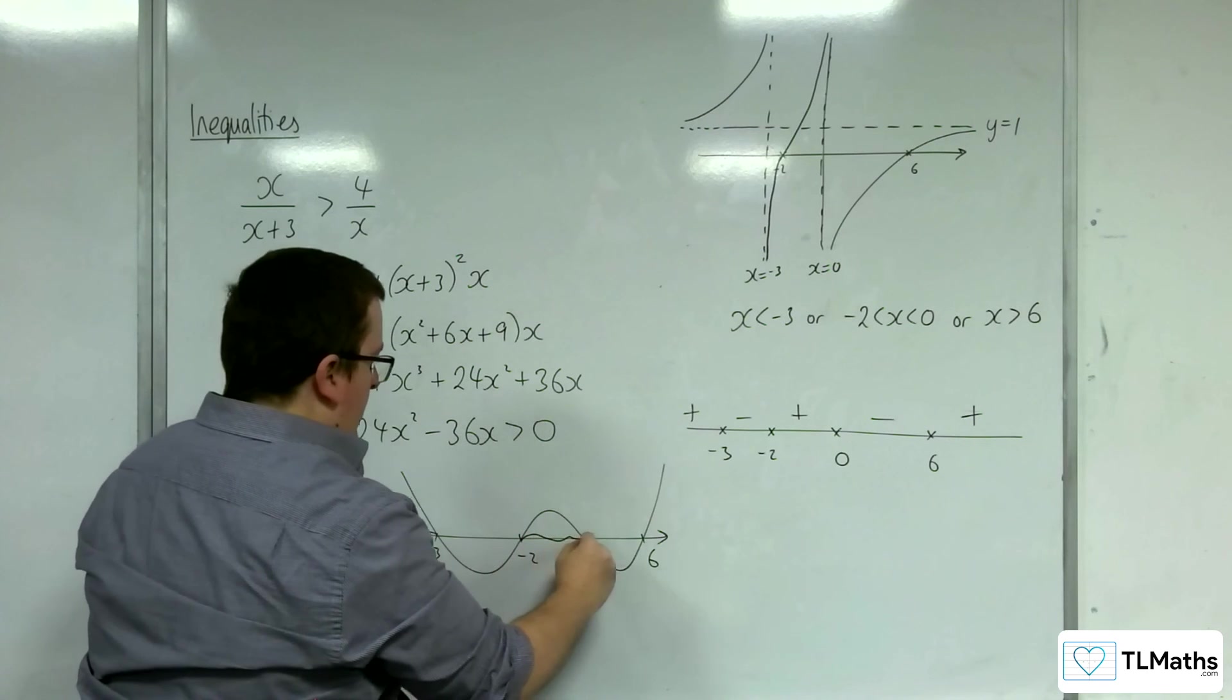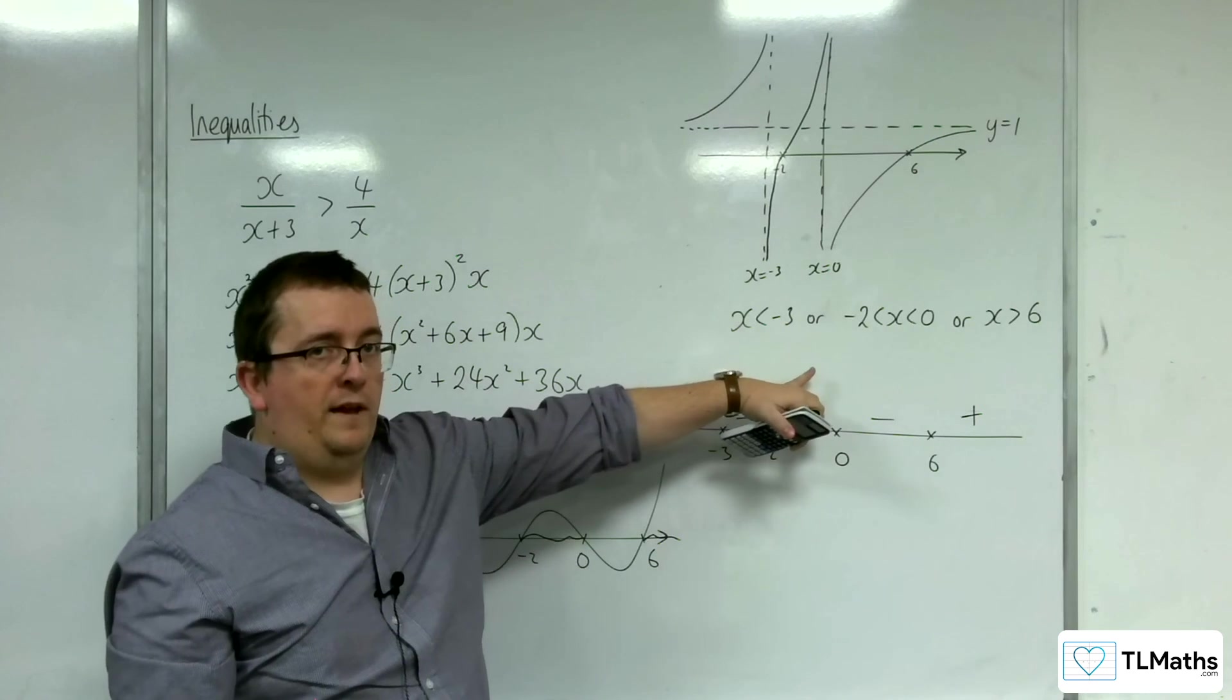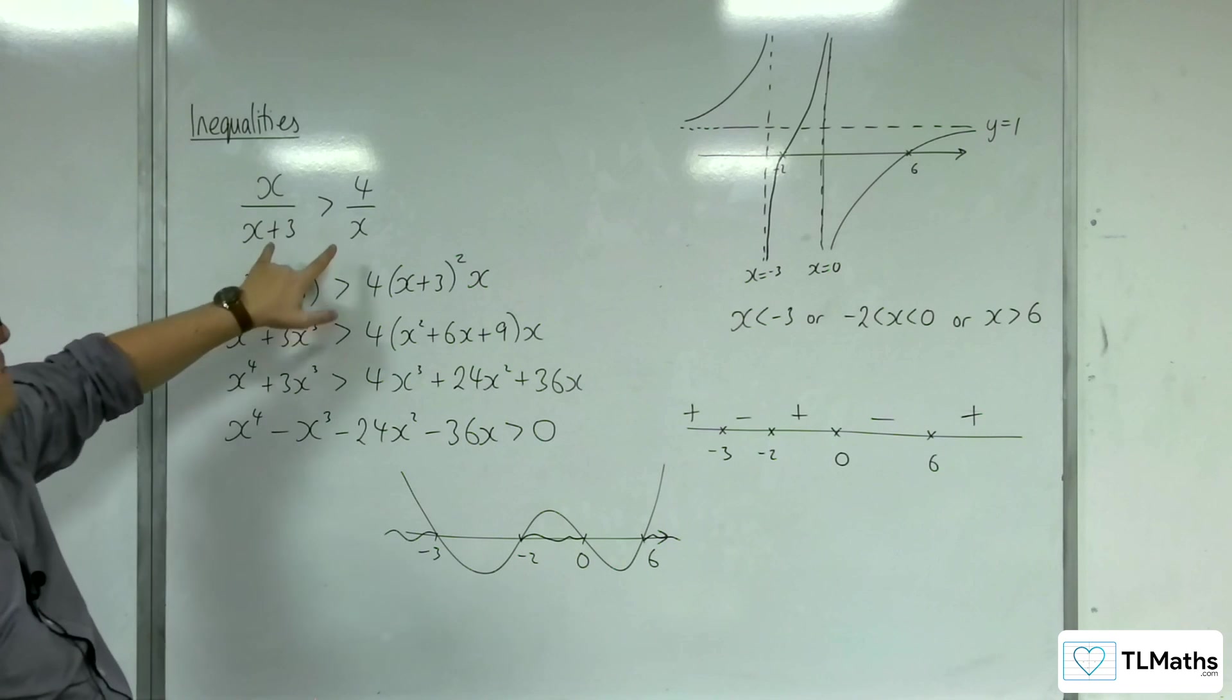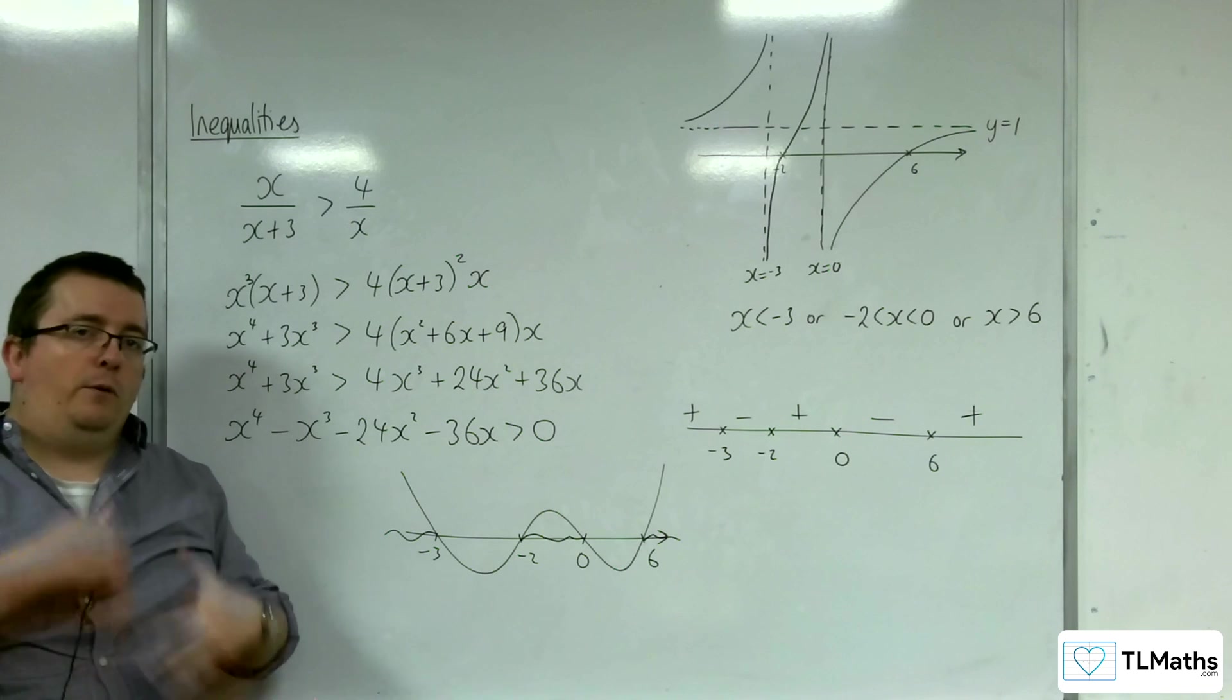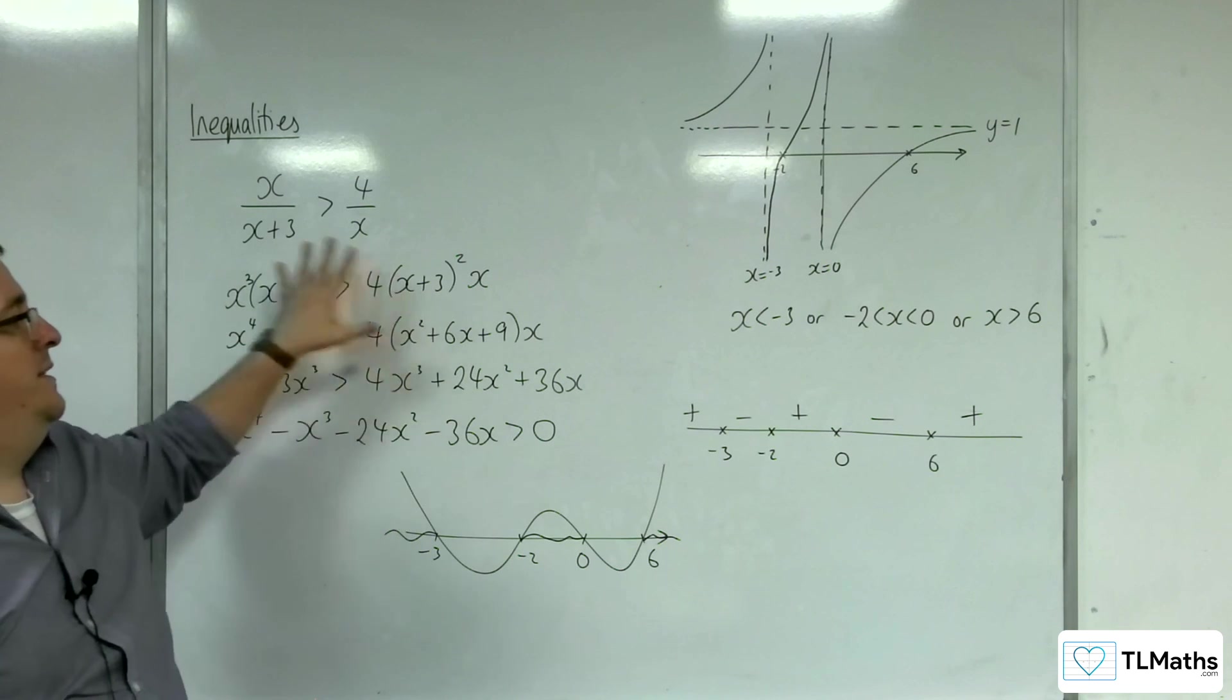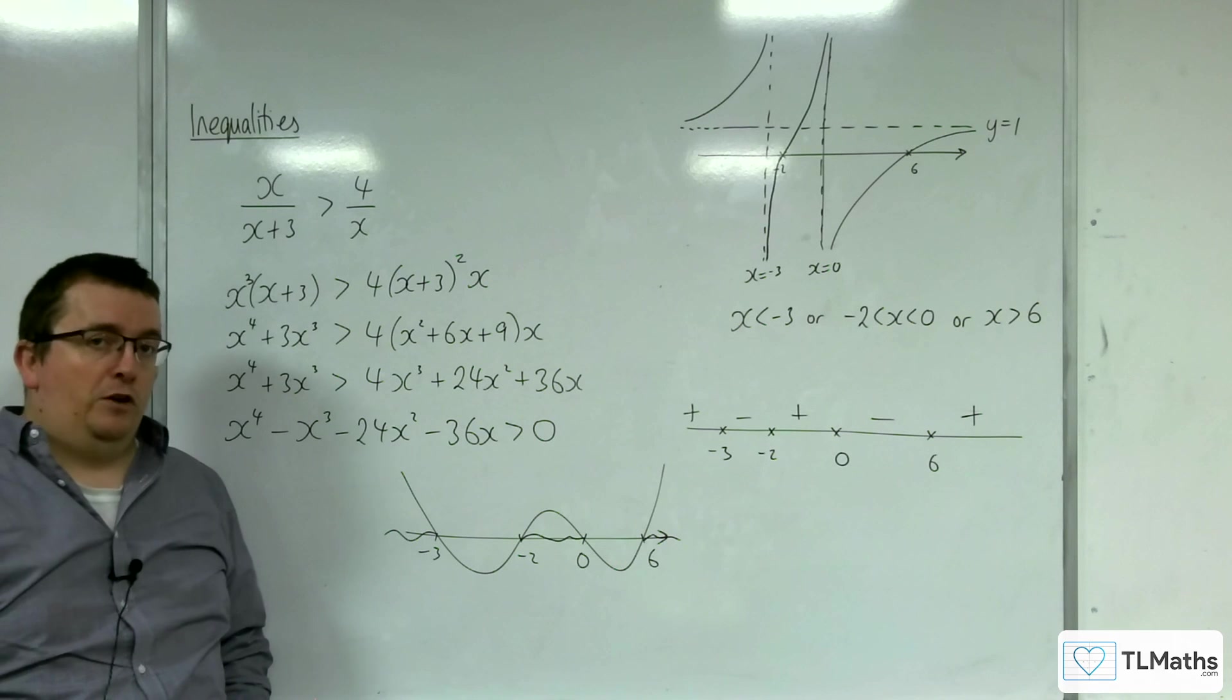There, there, and there. Which is x is less than minus 3, x is between minus 2 and 0, and x is greater than 6, as we got there. Okay. Now, you can see that actually, it wouldn't take much for this method to get you into quintics as well, and go up to higher degree polynomial problems. So by that point, you might actually be finding that the rearranging and using the number line method would actually be much more effective in the long term.